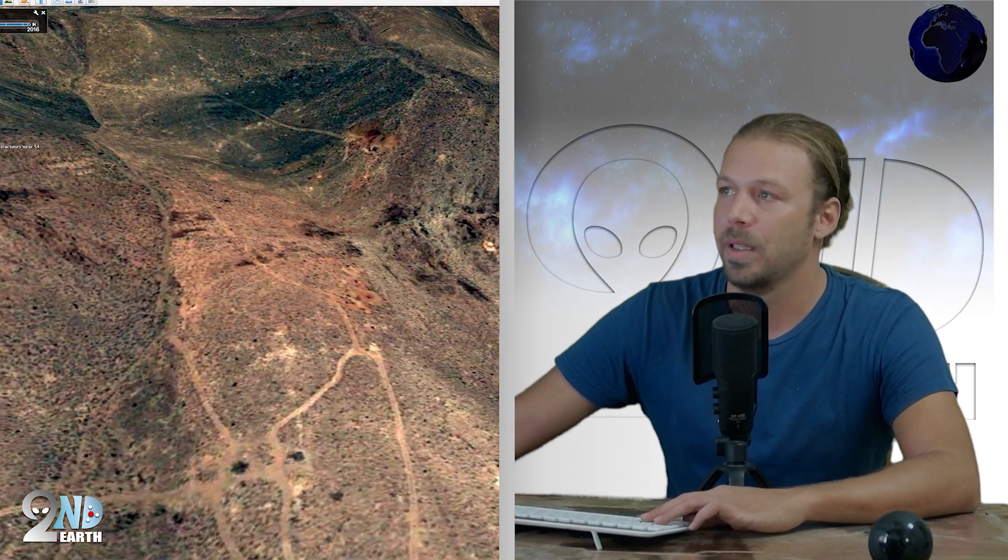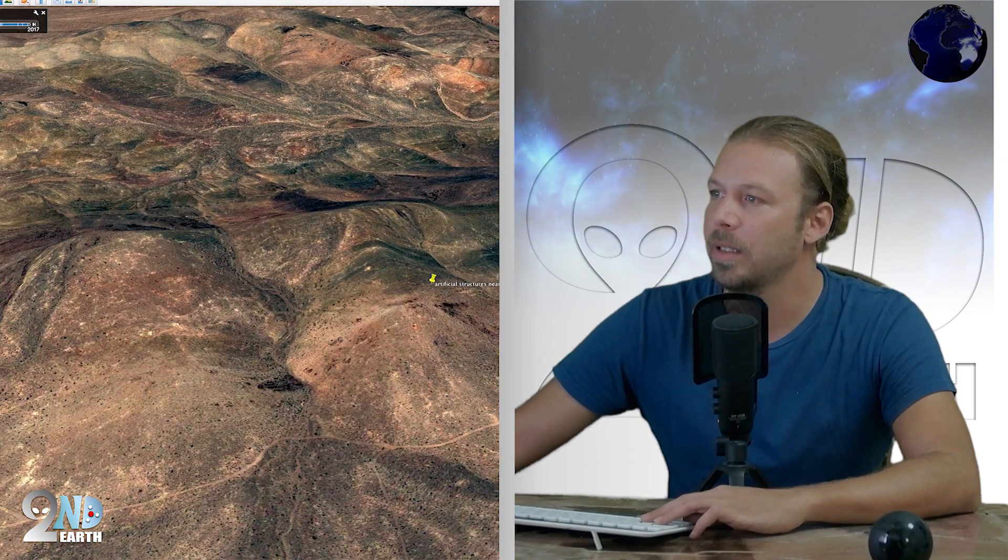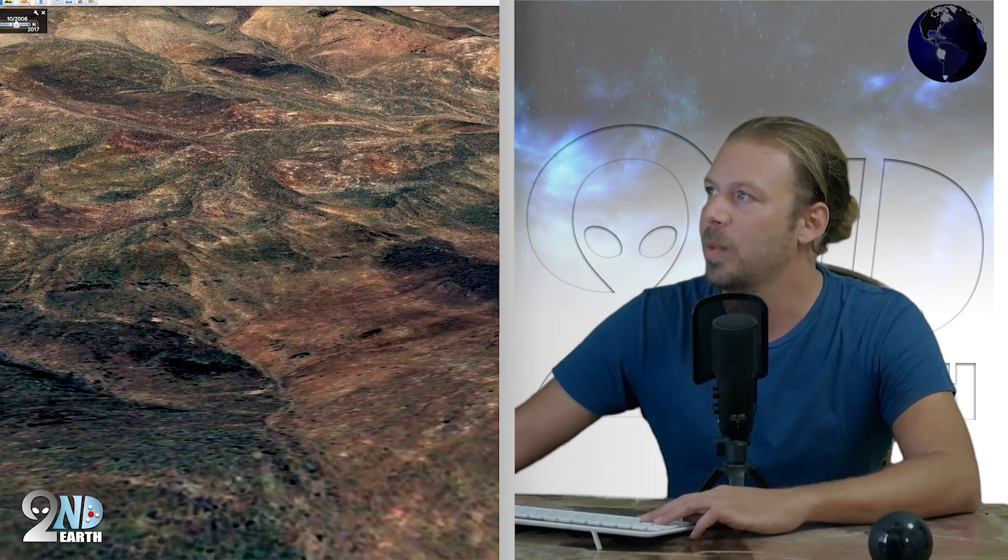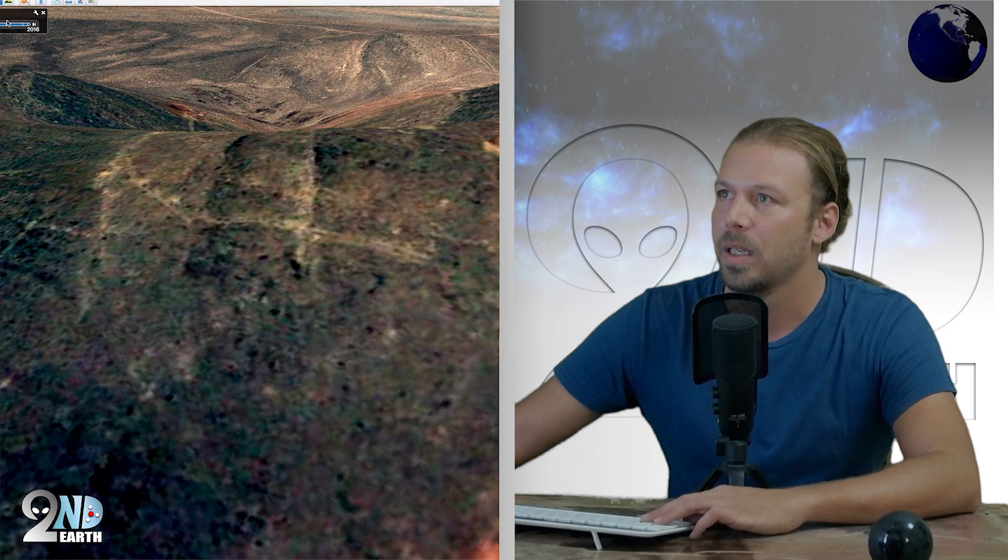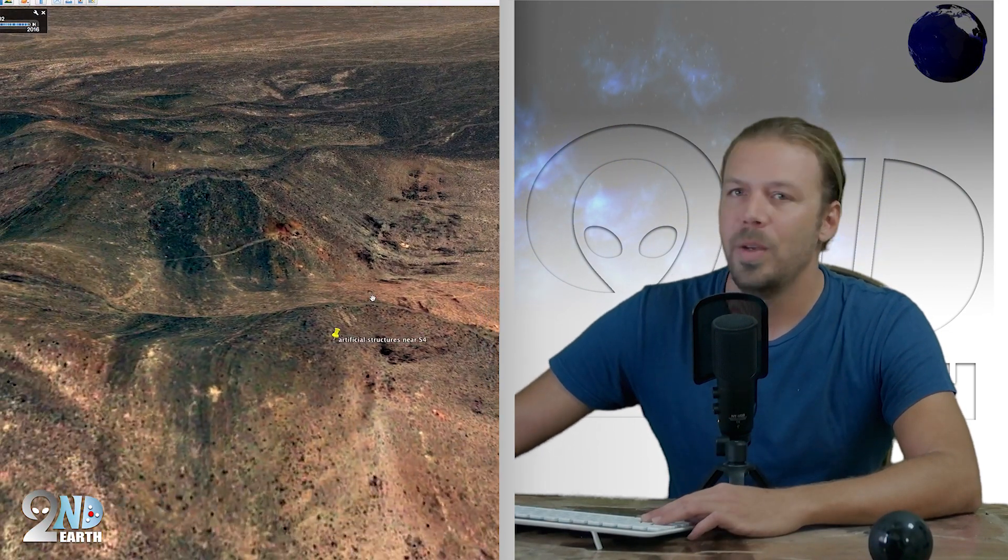And if we were to just keep following these tracks, we can actually go all the way over here. I'm not sure if this is a road or drainage, but let's turn it around. Here you can see physical tire tracks and physical structures embedded inside the mountain.